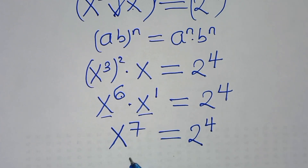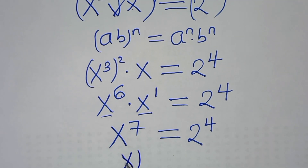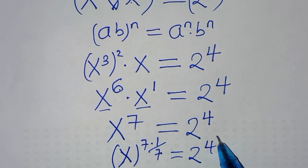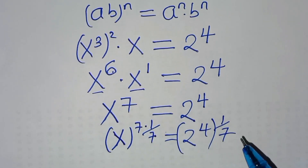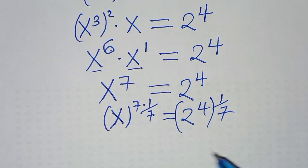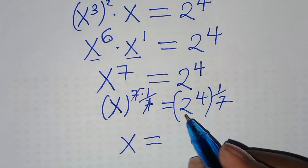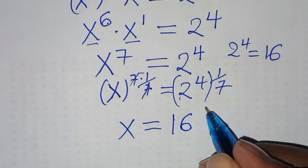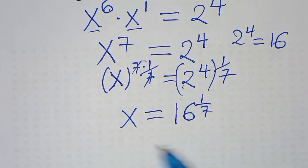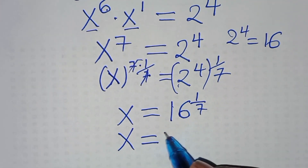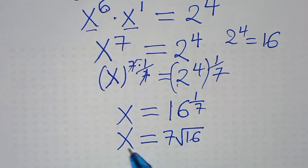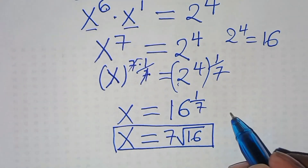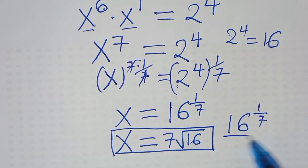So this implies that for x, we multiply both sides by 1 over 7, so this is equal to 2 raised to power 4 times 1 over 7. So now here we have x equal to 2 to power 4, which is the same thing as 16, so this is the same thing as 16 raised to power 1 over 7. So x is equal to the 7th root of 16, or equivalently 16 raised to power 1 over 7. So this is the value of x.